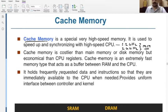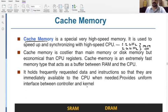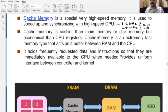Cache memory holds frequently requested data and instructions so that they are immediately available to the CPU when needed. The most recently used data or instructions are stored in cache memory so that the CPU can get that particular data at very fast speed whenever required. It also provides a uniform interface between the controller and the kernel.